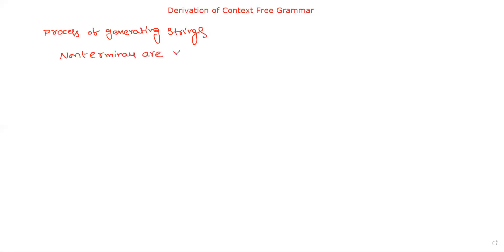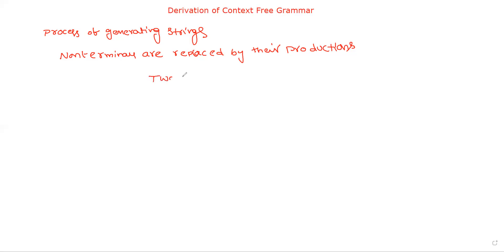Non-terminals are replaced by their productions continuously until only a set of terminals remains — and that set of terminals is the string. This is derivation from a context-free grammar.